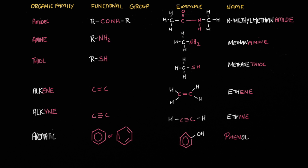Here's our second summary table. Let's begin with amides. Amides have the functional group C=O and N-H, and this functional group is in the middle of the molecule, meaning it's surrounded by two R groups — clearly depicted here with two R groups on either side. The name of the molecule is N-methyl methanamide. I'm more interested in you being able to identify the functional group and the family it belongs to, and in this example it's a giveaway because the name states it's an amide.